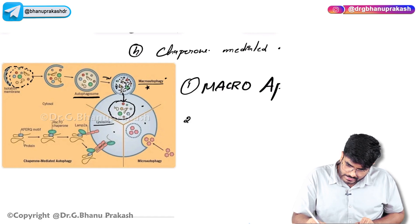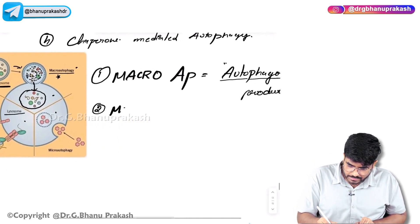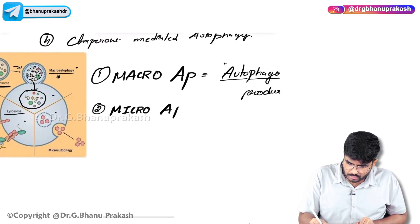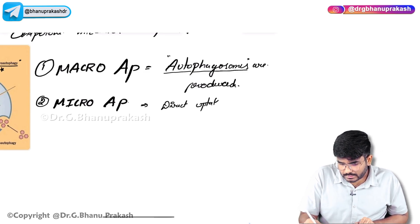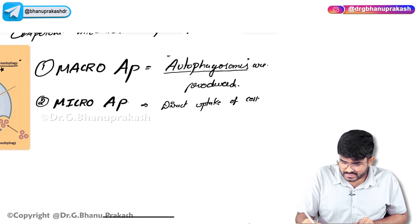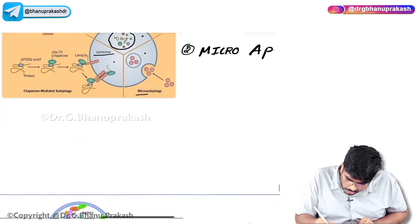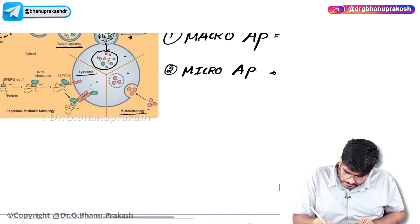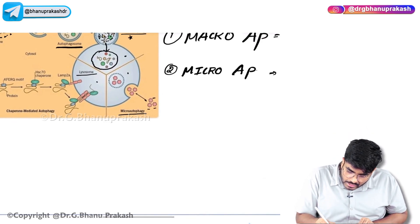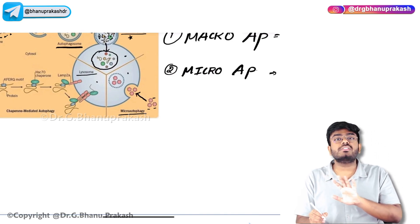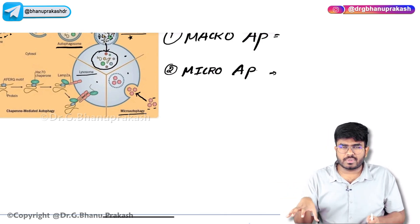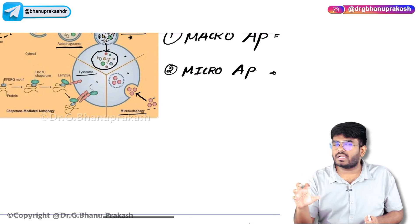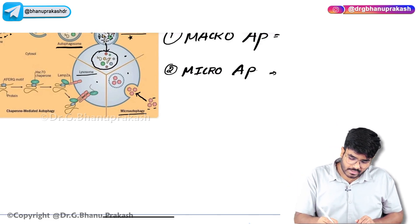The second type is micro autophagy. In micro autophagy, there is direct uptake of cell organelles — there is no formation of an autophagosome. The lysosome will go to the cell organelles and they are directly taken up into the lysosomes. This is called micro autophagy.